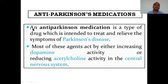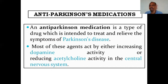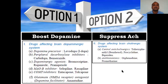Anti-Parkinson's medications are drugs intended to treat and relieve the symptoms of Parkinson's disease. Most of these agents act by either increasing the dopamine activity or reducing the acetylcholine activity in the central nervous system. Those are the two main options.